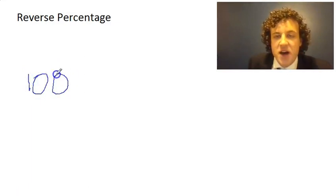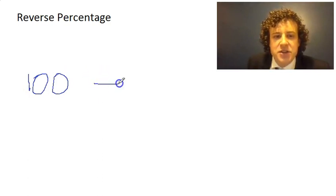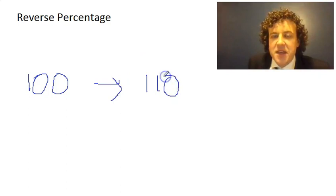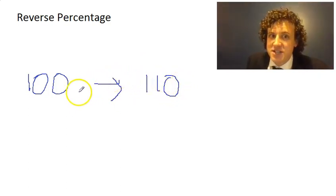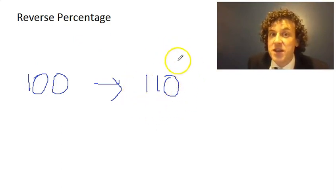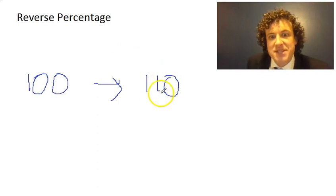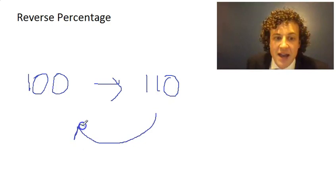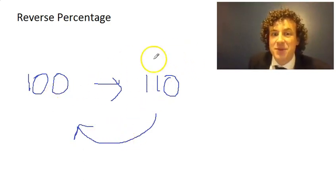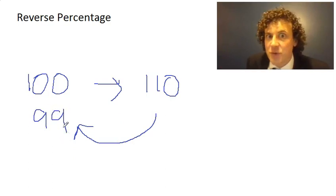Let's take a look. If you've got 100 - pounds, kilograms, it doesn't matter - and you increase that by 10%, then 10% of 100 is 10, so that becomes 110. If I want to reverse that and get back to 100, and I just do a decrease of 10%, the problem is that what I'm taking the percentage of has got bigger. Here 10% was 10, but now 10% of 110 is 11.